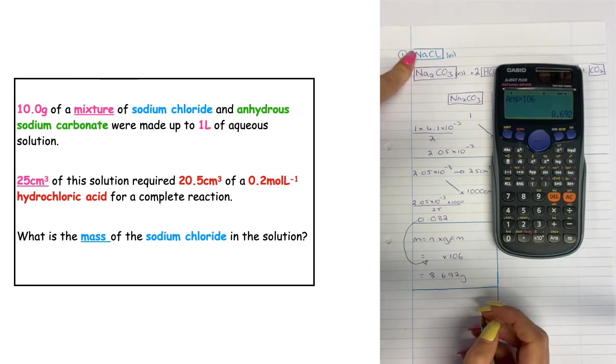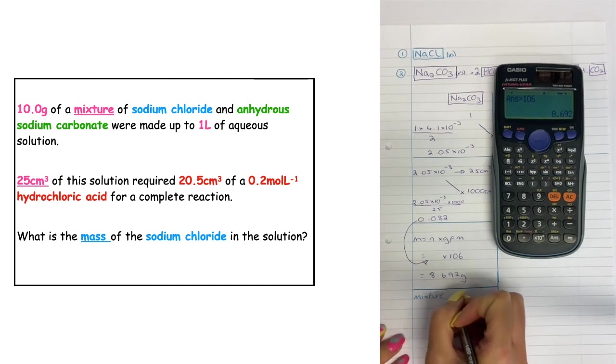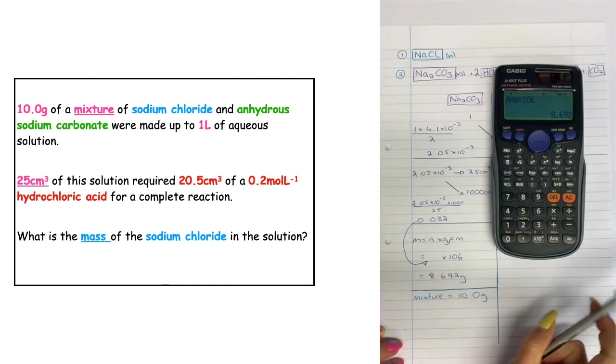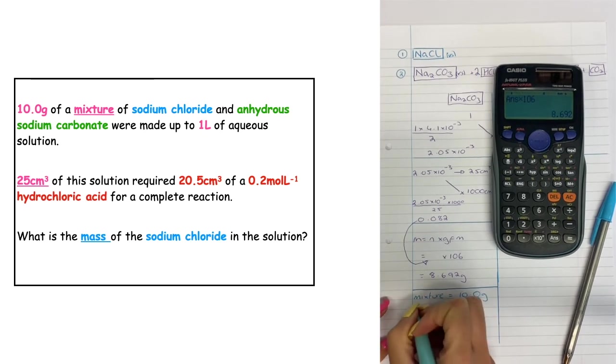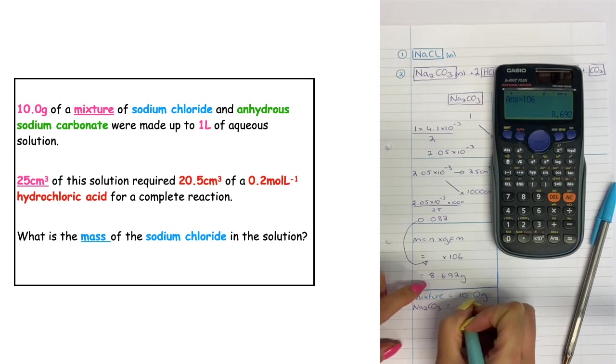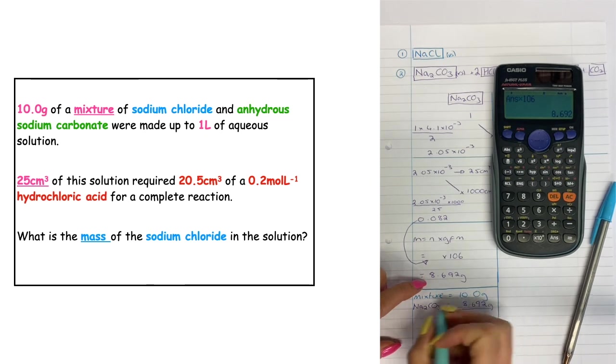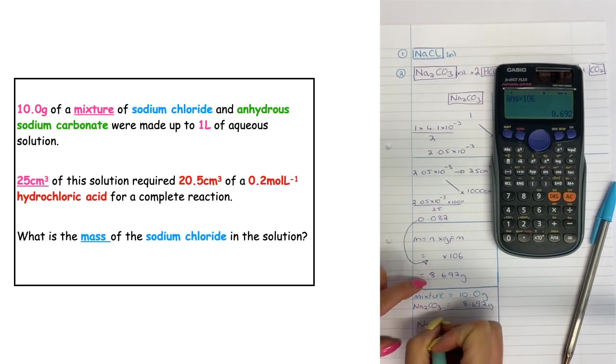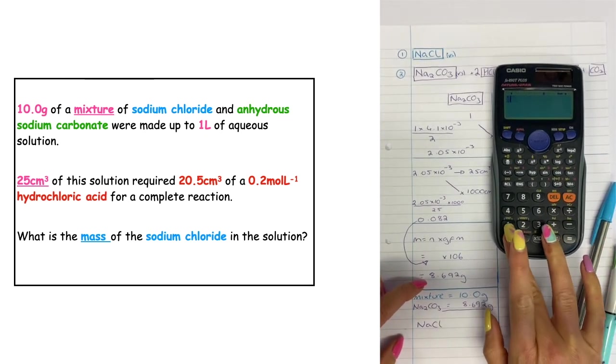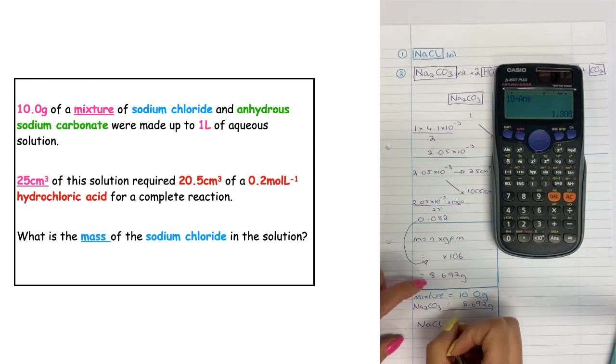What we can see is the mass of the mixture was 10 grams. If we take away our sodium carbonate which we've worked out as the mass as 8.692 grams, that will allow us to work out the mass of the NaCl. So 10 take away answer, and that gives me a mass of sodium chloride as 1.308 grams as the mass of the NaCl.